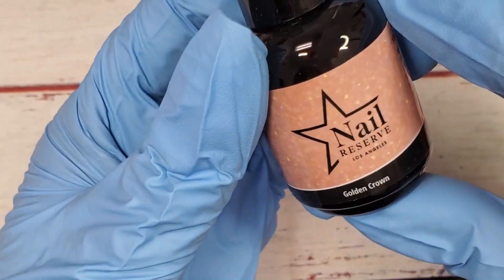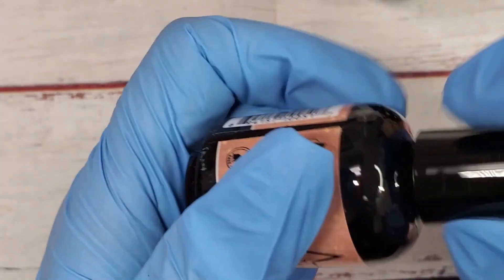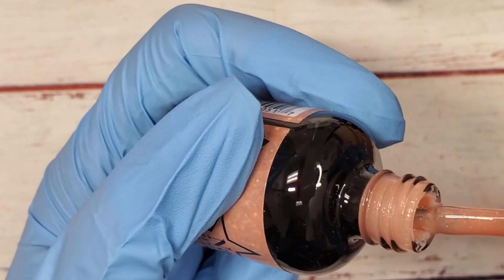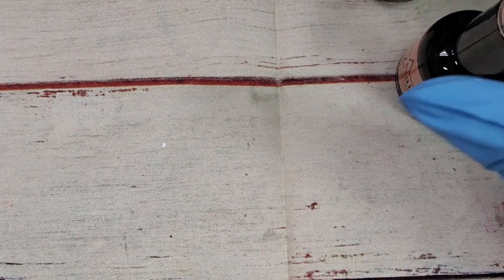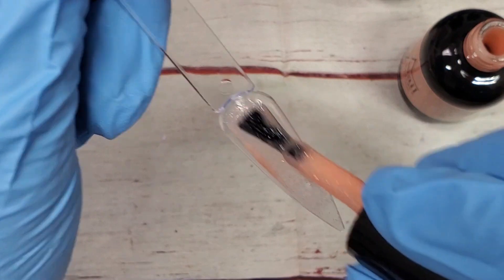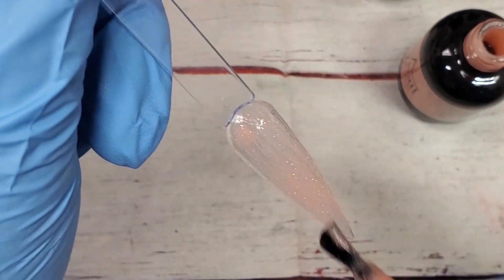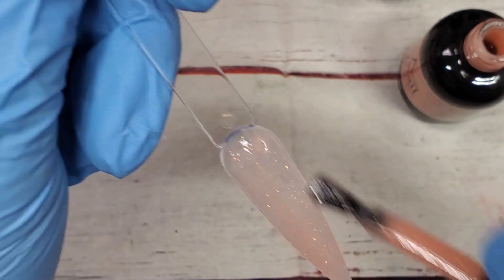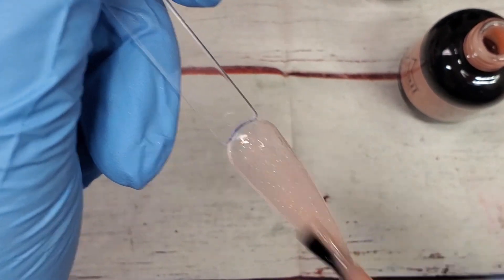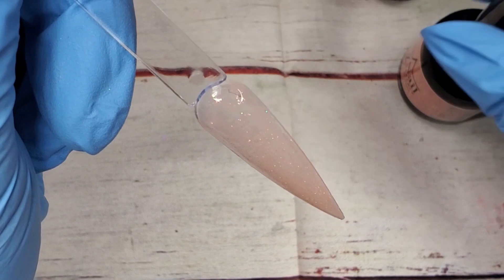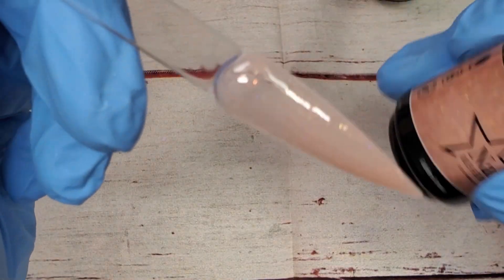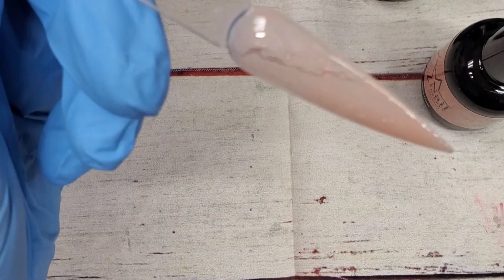Okay, so then the last one is called Golden Crown, and this is another glitter. Oh, that is pretty. So it looks like it has holographic glitter, like fine glitter in it. That is so pretty. It's like a soft pinky peachy color with holographic glitter in it.